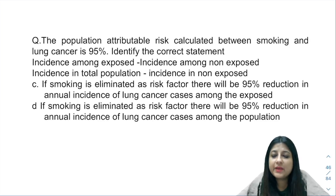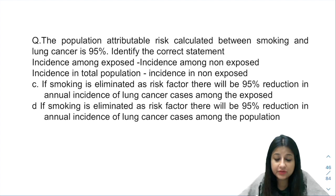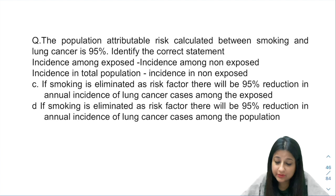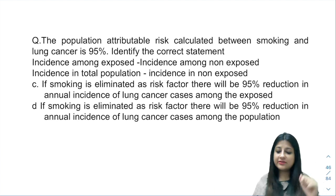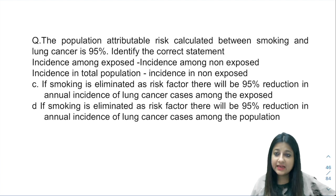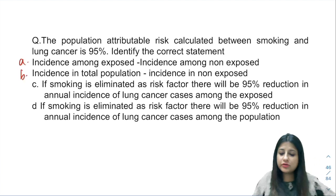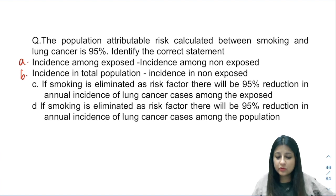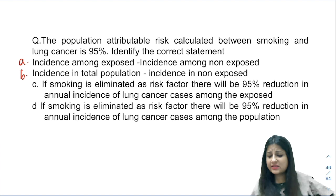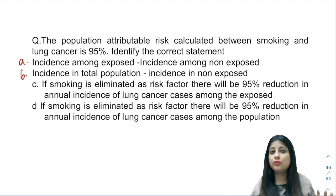Hello everyone. A very important previous year question is the interpretation of some measures of strength of association. They are asking about population attributable risk — the population attributable risk calculated between smoking and lung cancer is 95%. Identify the correct statement. Options include: incidence among exposed minus incidence among non-exposed, and incidence in total population minus incidence in non-exposed.